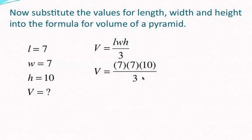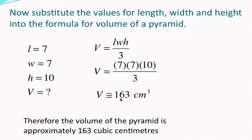So we multiply the length, width, and height, and divide by 3, and you should get an answer of 163 cubic centimeters. So therefore the volume of the pyramid is approximately 163 cubic centimeters.